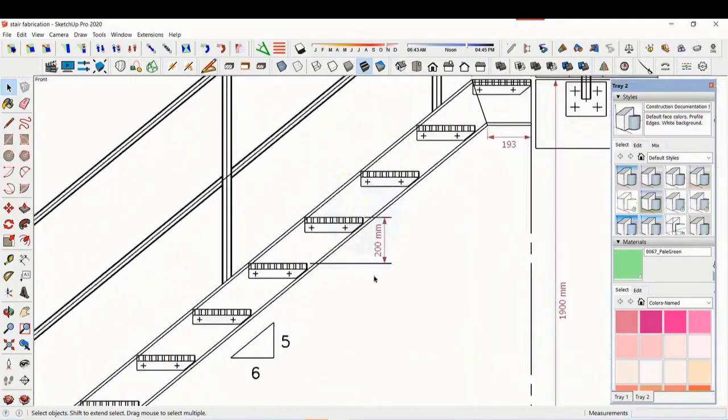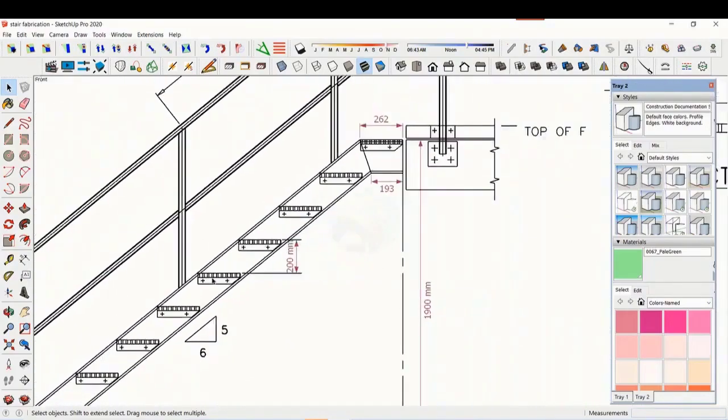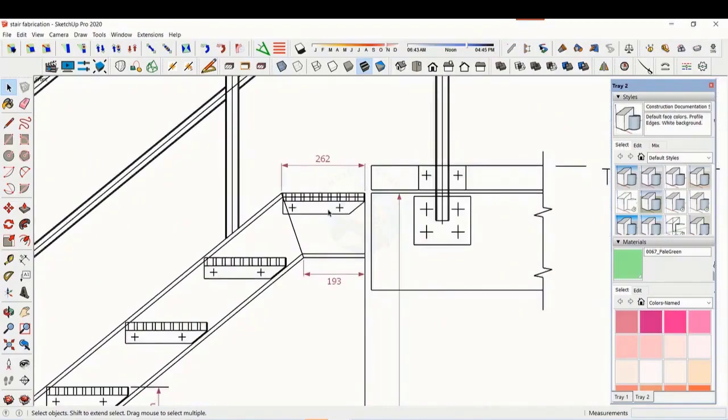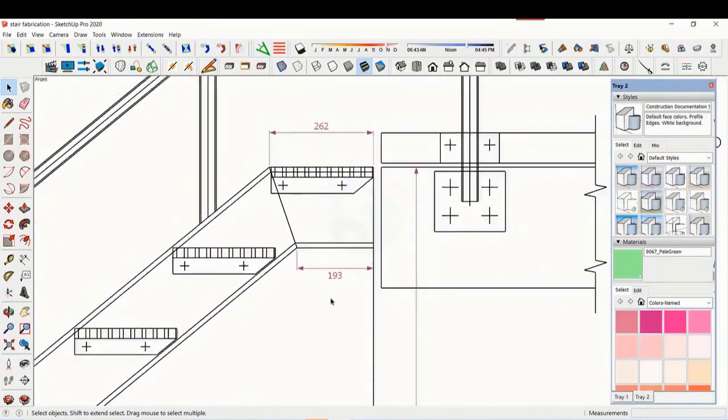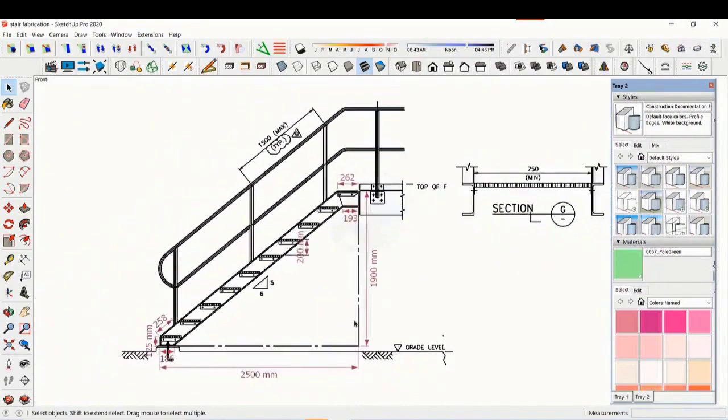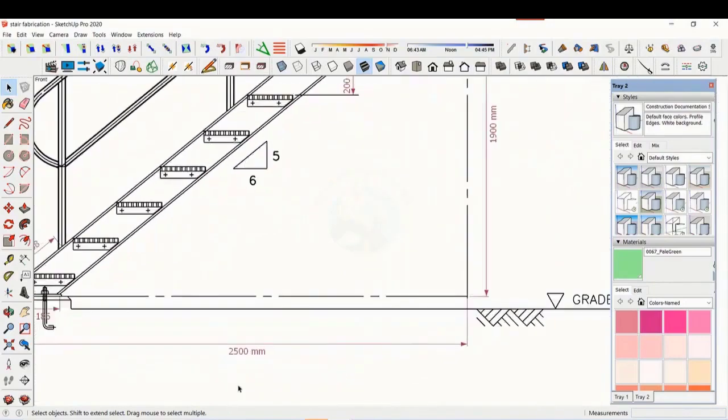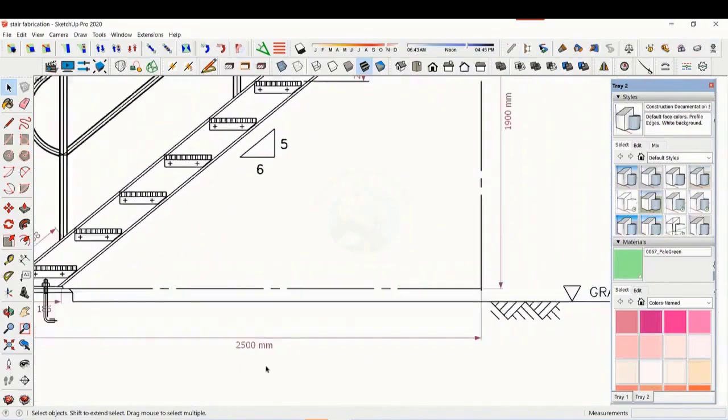The basic structure is made from ISMC 200. The height of the staircase is 1900 millimeters and the length is 2500 millimeters. The width of the staircase is 750 millimeters.